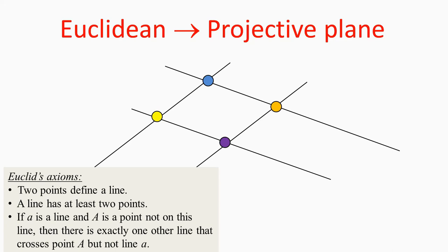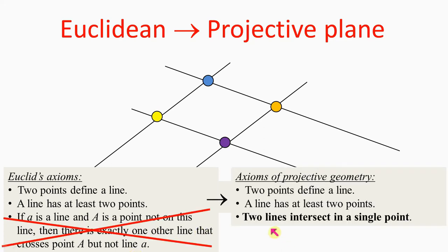We often say that parallel lines meet at infinity, but that is incorrect in Euclidean geometry because the parallel axiom states clearly that parallel lines don't intersect — infinity is not included in the Euclidean plane. In projective geometry, they do. To handle the singularity of parallel lines, the parallel axiom is modified: two distinct lines always intersect each other in a single point. With this modification, parallel lines disappear and we arrive in projective geometry.